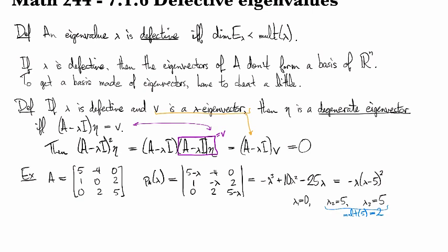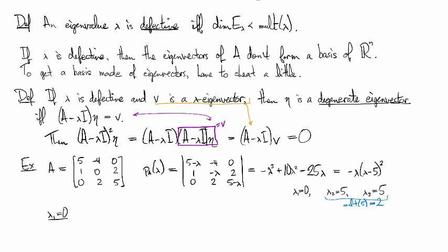Now going on to find the eigenvectors for the zero eigenvalue, we reduce A minus zero I, which is just A. And so this becomes [1 0 2; 0 1 5/2; 0 0 0].